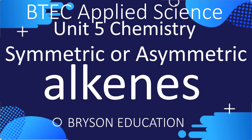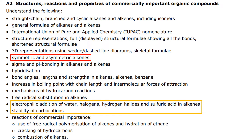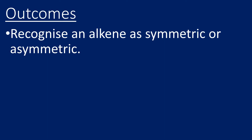Hello there, welcome to my channel on chemistry lessons. This is BTEC Applied Science Unit 5, and we're going to look at the difference between a symmetric and asymmetric alkene. It comes towards the beginning of the spec, but the main reason this is on here is because it's going to help us a lot in future videos when we start looking at the reactions of alkenes and particularly the stability of carbocations. The aim of this video is that you'll be able to recognize a symmetric or an asymmetric alkene.